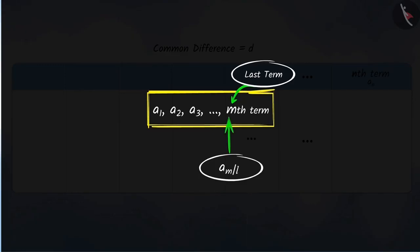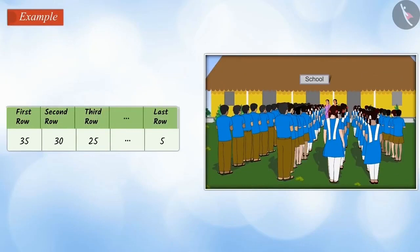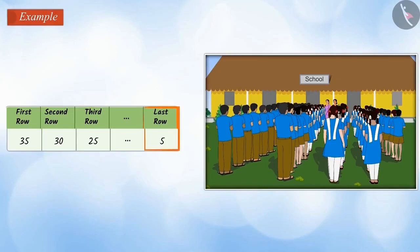Let's see an example. In a school ground, there are 35 students in the first row, 30 in the second row, 25 in the third row, and so on, with 5 students in the last row. How many rows of students are there in the school ground?